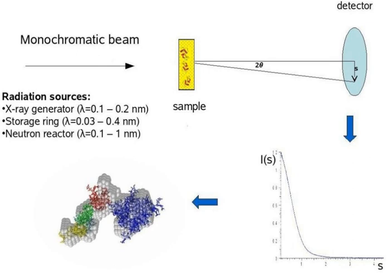DAMMIF is an elegant program, which takes a sphere with diameter equal to the maximum particle size d_max, which is determined from the scattering data, and fills it with beads. Each bead belongs either to the particle or to the solvent.